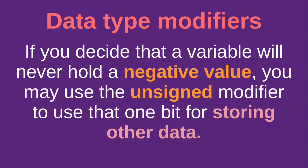If you know that the value will never hold a negative value, it is preferable to use unsigned int so that you can use all 32 bits available. When you declare a variable as int without specifying unsigned, one bit is reserved for the sign, so only 31 bits remain for data and one is for the sign.